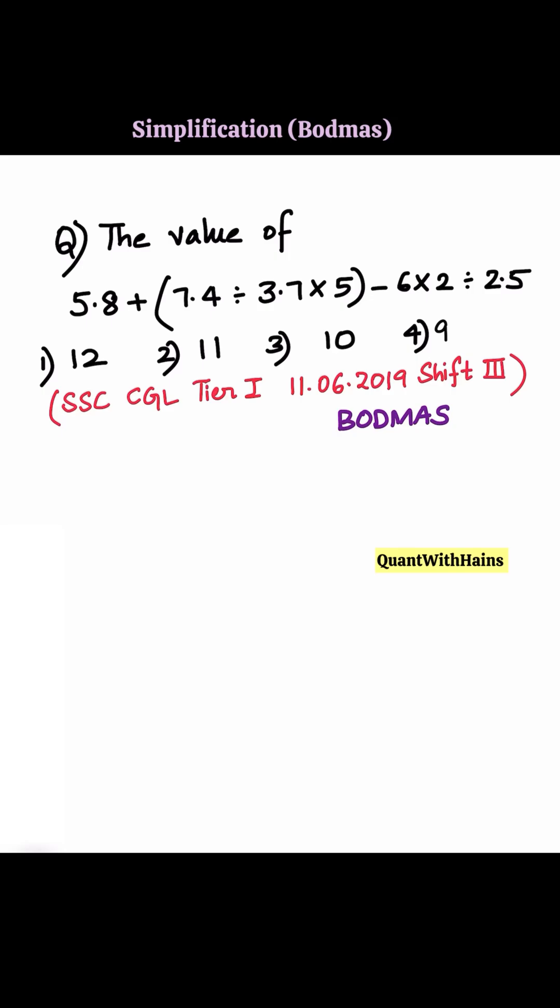Simplification using BODMAS rule. First division, multiplication, addition, subtraction, but before we need to solve what is in the bracket. There is a bracket, so first we need to resolve it: 5.8 plus 7.4 divided by 3.7, then multiplication.